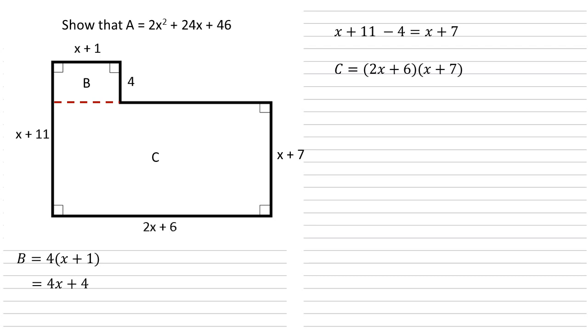We've now got the dimensions of rectangle C so let's do 2x plus 6 times by x plus 7. Multiplying out our brackets by using the FOIL method or whichever method you like we get 2x squared plus 14x. That's our 2x times by the x and the 7 and 6x plus 42 from the 6 times by the x and the 7. Bringing our x's together this means the area of C is 2x squared plus 20x plus 42.